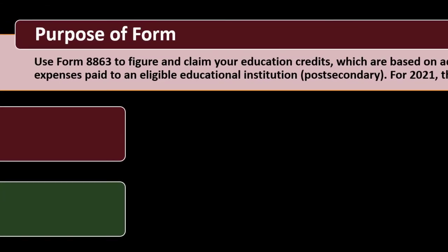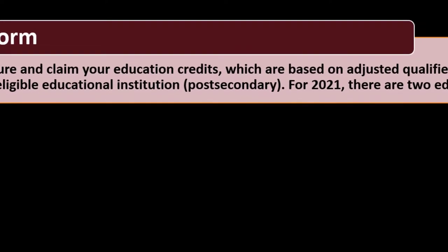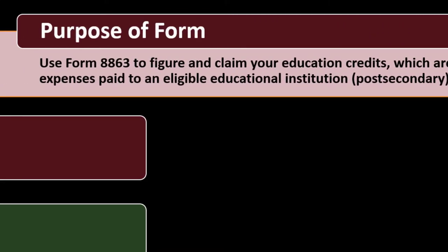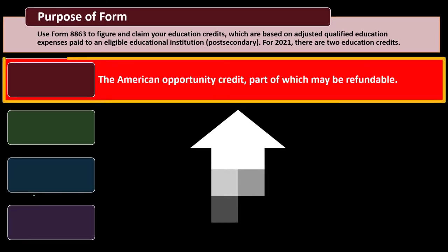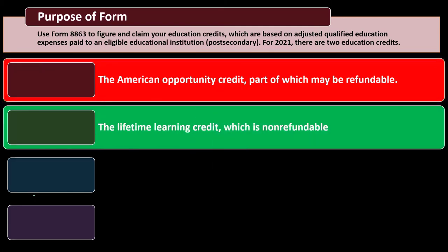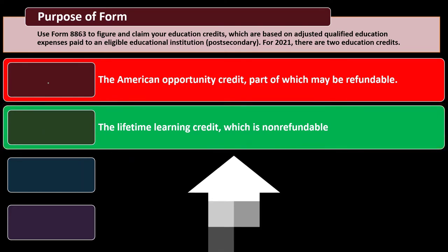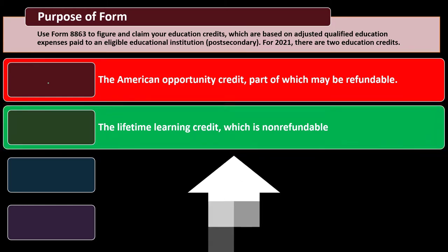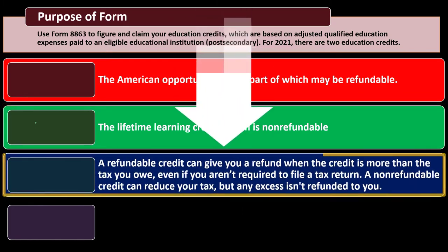Purpose of form: use Form 8863 to figure and claim your education credits, which are based on adjusted qualified education expenses paid to an eligible post-secondary educational institution. For 2021, there are two education credits: the American Opportunity Credit, part of which may be refundable — which is a good thing — and the Lifetime Learning Credit, which is non-refundable. Typically you get the most benefit if you qualify for the American Opportunity Credit, but it is more stringent. If you don't qualify, you default to the Lifetime Learning Credit.